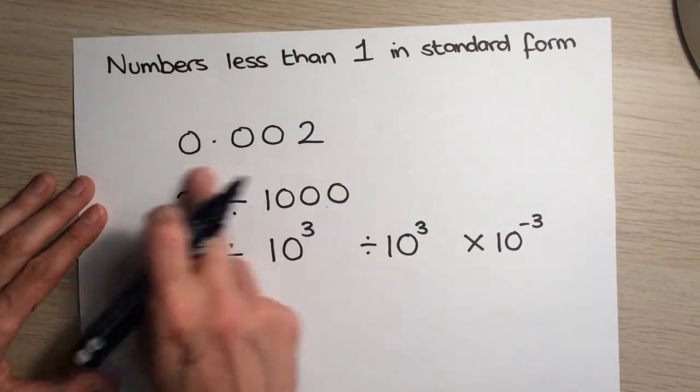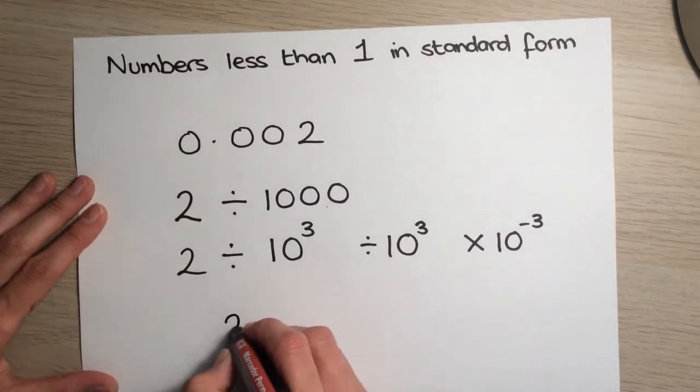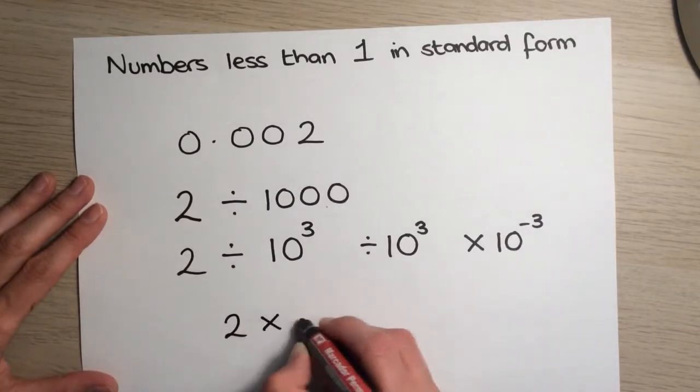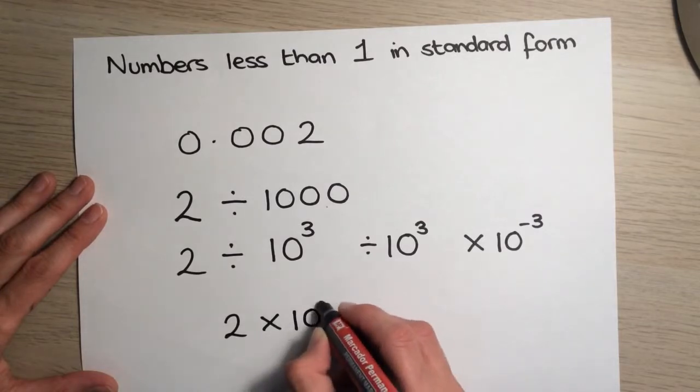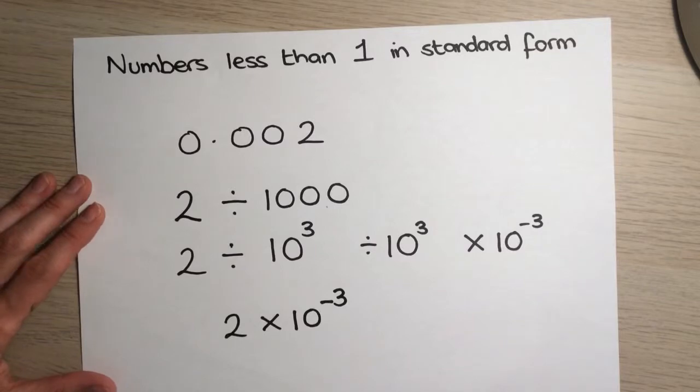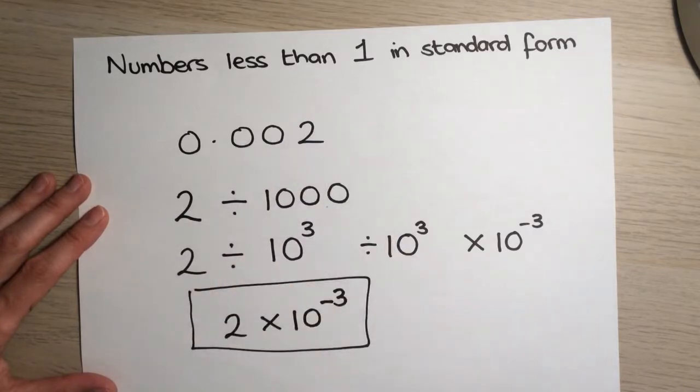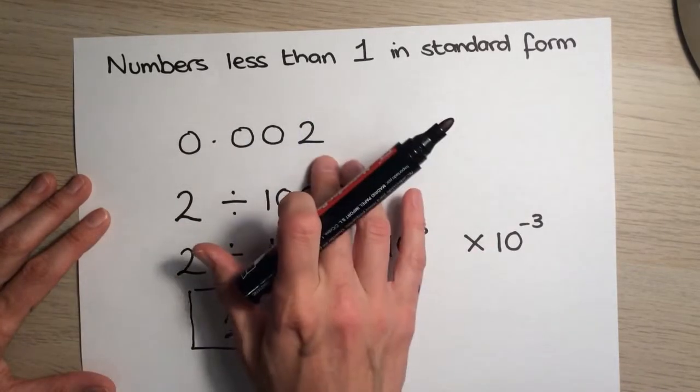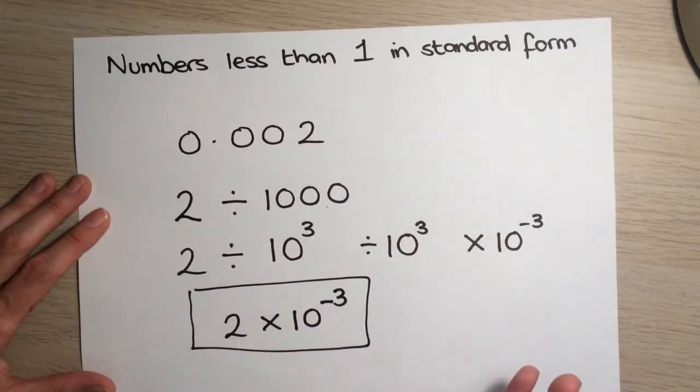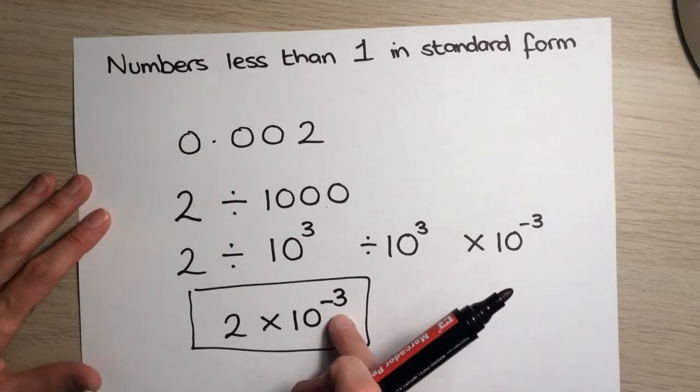So if we wanted to write this in standard form, we could write 2 multiplied by 10 to the power minus 3. And that is 0.002 in standard form. Now notice that because the number is less than 1, when we write a number in standard form, the power becomes negative.